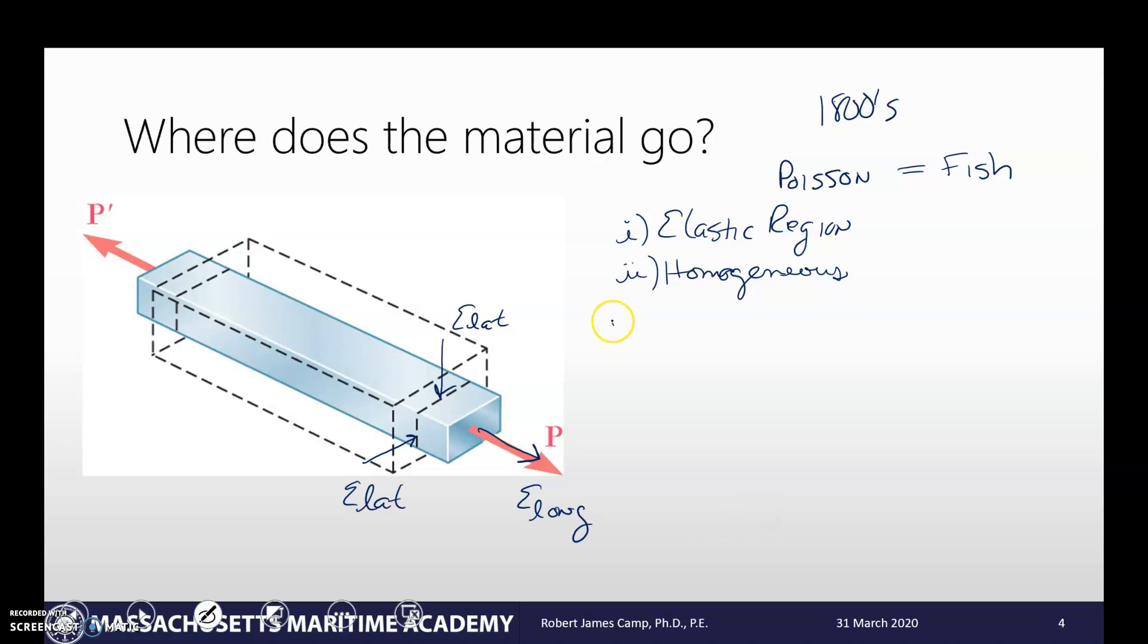And the last thing that we need is an isotropic material. Isotropic material means that it's uniform in all directions. So we've got the material. There's no pits, no voids. It's all uniform.